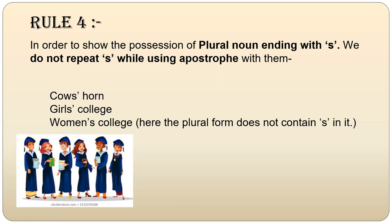Rule number 4: In order to show the position of a plural noun ending with S, we do not repeat S while using apostrophe. We just put an apostrophe — for example, 'cows' horn' — we put an apostrophe at the end and do not put S again. 'Women's college', 'girls' college' — we do not put S because it is already plural.